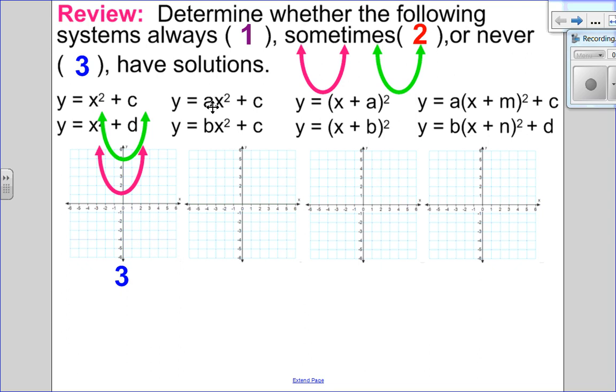In my next one, I have ax squared plus c and bx squared plus c. That tells me the parabolas move up the same amount, say two units, but they have different vertical stretch. You can see they meet together at the C point. But beyond that, the pink graph will always be inside the green graph. So this will always have a solution, and it will always have one solution.